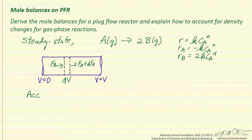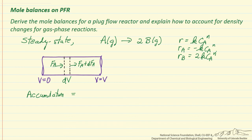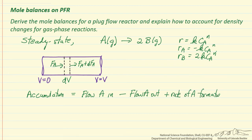We are going to do a mass balance on this differential slice using the general form: the accumulation in that volume dV of component A is due to the flow of A into the volume, minus the flow of A out, plus the rate of A formation due to reaction. If A is forming it's positive; if A is being used up it's negative.